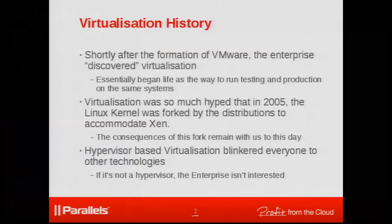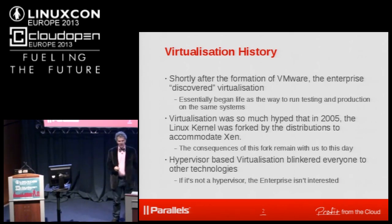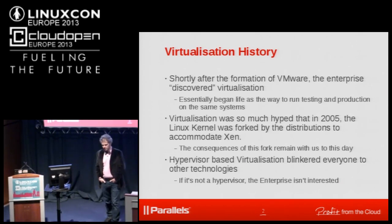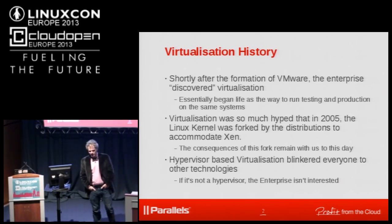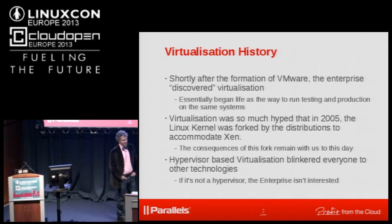Let's begin looking at containers from the history of virtualization. Virtualization has always been about hypervisors, from the old days of VMware bringing it to the masses. By around 2005, the competing virtualization implementations - basically Xen - forced distributions to actually fork the kernel itself in order to accommodate Xen.